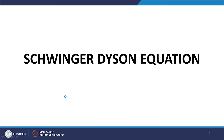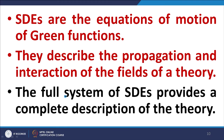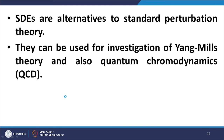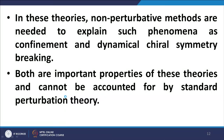Now we come to the Schwinger-Dyson equations. The Schwinger-Dyson equations are the equations of motion of the green functions and represent the propagation and field interactions of a theory. The full system of Schwinger-Dyson equations completely describes the theory. They are alternative techniques for solving the theory — alternatives to standard perturbation theory. They are more compatible for investigating weak interactions and strong interactions, that is the Yang-Mills and quantum chromodynamics environments.